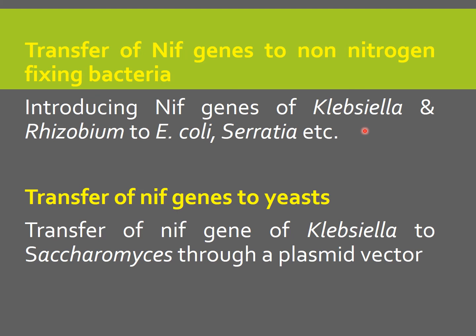The advantage here is that organisms like E. coli, Serratia, or Bacillus are more hardy and more resistant to environmental changes in the soil, and they can survive much better than some nitrogen fixers like Rhizobium. So if we transfer the NIF genes to these organisms, they will freely live in the soil, survive harsh environmental conditions, and fix nitrogen — providing it into the soil and making the soil rich in nitrogen.